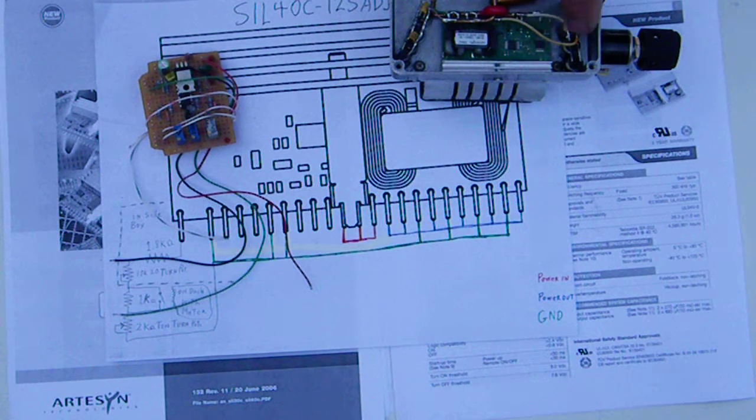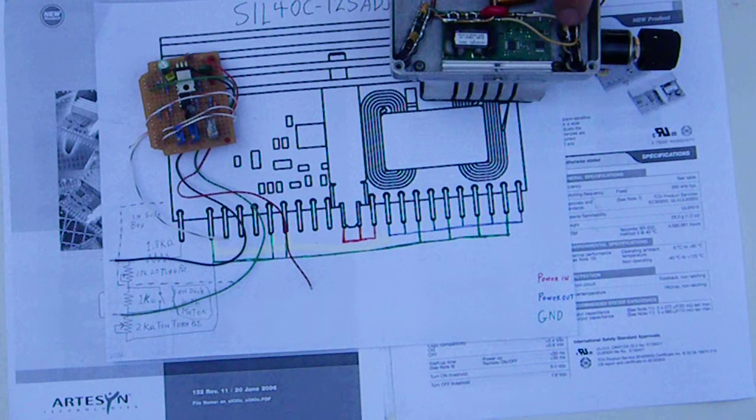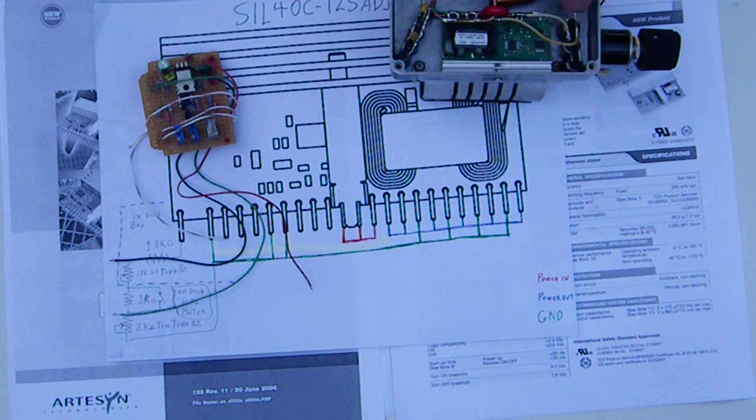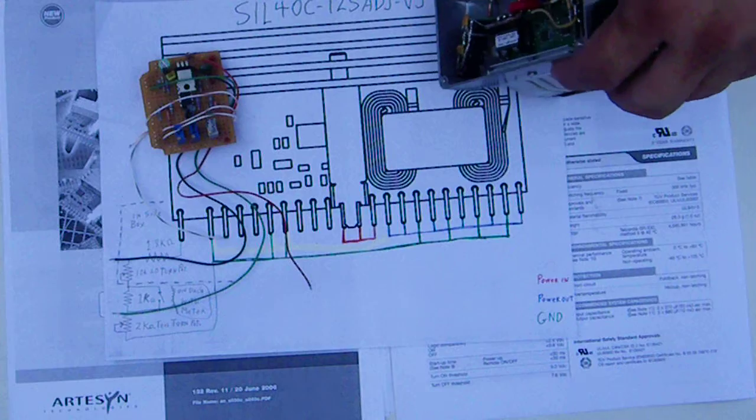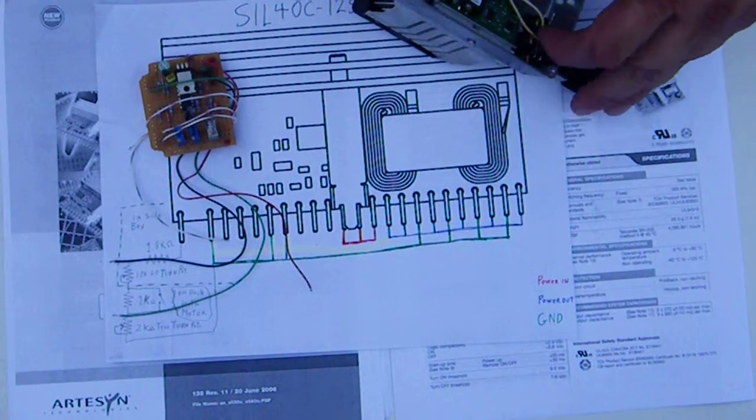And then your positive and negative, these are 16 volt or maybe 25 volt if you want them. I'm using I think 16 volt. These are only 6.3 volt due to the fact that the maximum is going to be 5 volts. So you don't need high voltage ones, just a row of caps and over here a row of another caps.